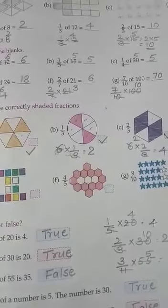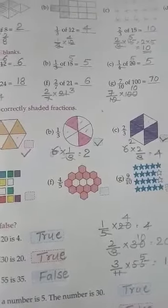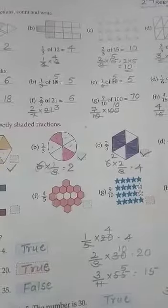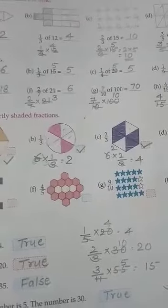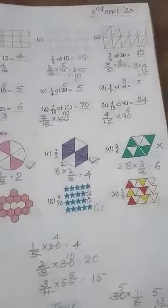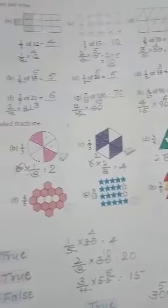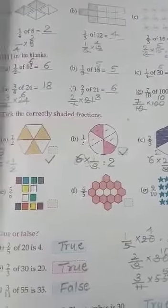1 by 3 of 15, that is equal to 5. 1 by 4 of 20, that is 5. 1 by 6 of 18, that is 3. And 3 by 4 of 24, that is 18.